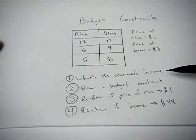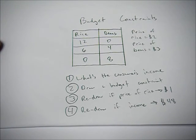So the first question here is what is the consumer's income? This is pretty simple to figure out. We just have to multiply how many units are purchased times their price. So for the first one, rice, we can see that twelve times its price of two gives us twenty-four.